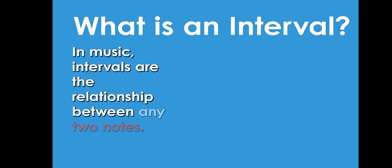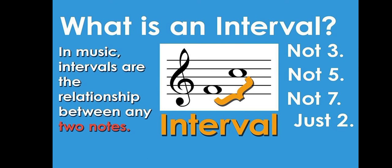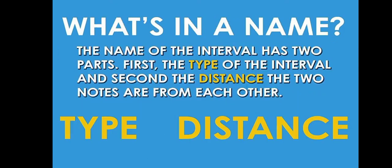We're talking about just two notes — note 3, note 5, note 7 — but just two notes. The name of the interval has two parts: first, the type of the interval, and secondly, the distance the two notes are from each other. So the parts are the type and the distance.